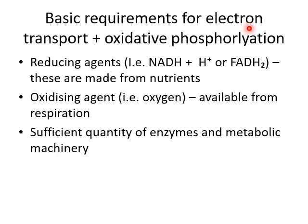Just to recap: this is electron transport, and because we're using electrons to combine ADP with phosphate, we call this oxidative phosphorylation. Our basic requirements for this are reducing agents — and remember that these are vitamin B components. So if you have a vitamin B deficiency of either one, we're going to struggle to make these reducing agents, and then our electron transport chain will not work. We also need things like coenzyme Q, so we need a sufficient quantity of enzymes and metabolic machinery.